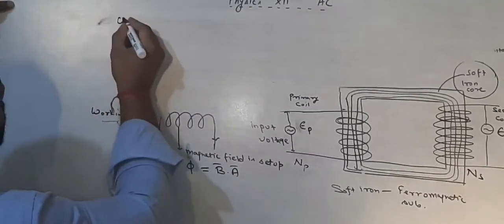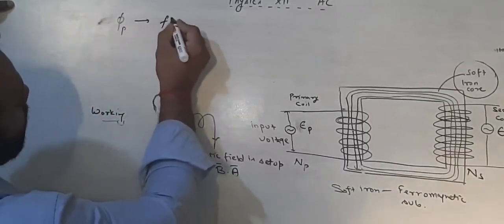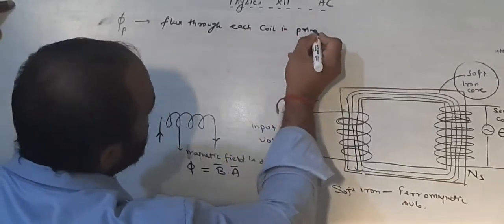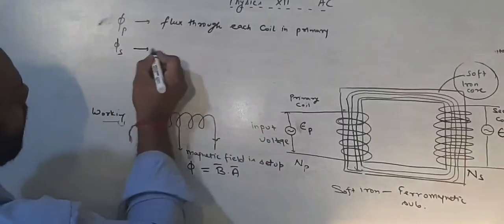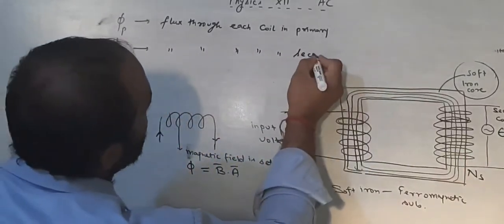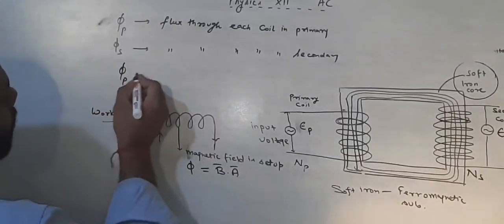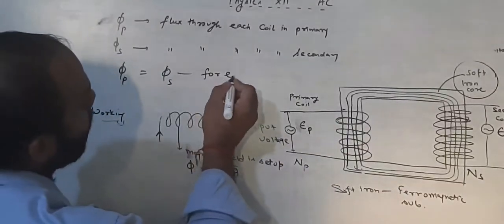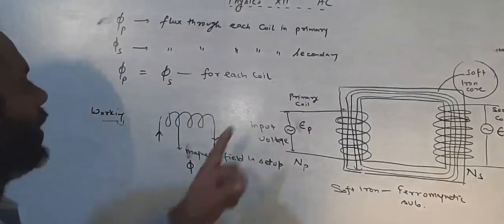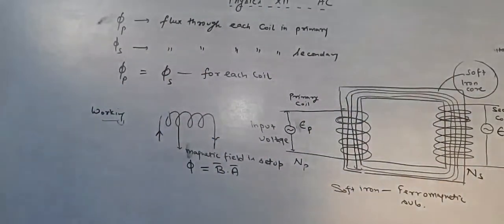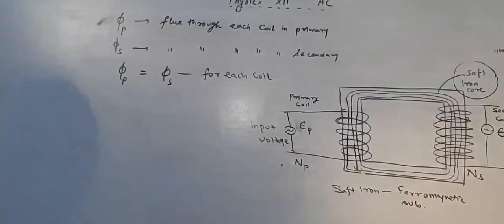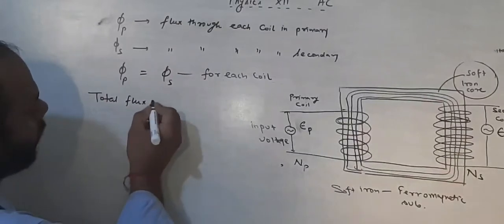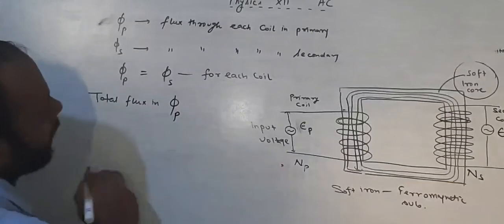Flux through each coil in the primary can be written as phi_P, and flux through each coil in the secondary as phi_S. The flux in the primary is equal to the flux in the secondary for each coil. So the total flux in the primary coil — phi_PT — equals NP times phi_P, and the total flux in the secondary — phi_ST — equals NS times phi_S.